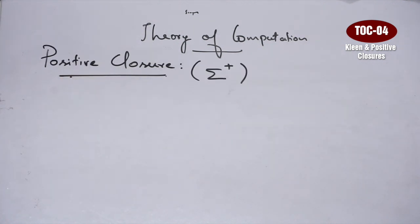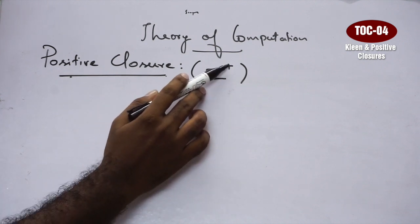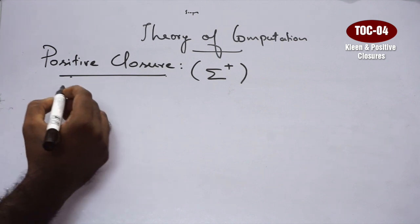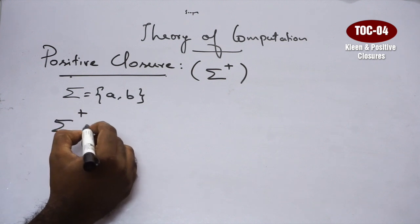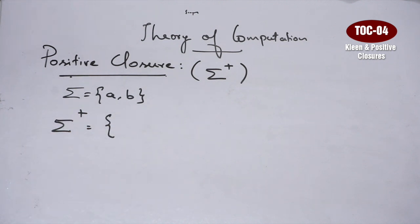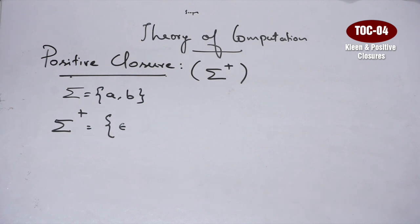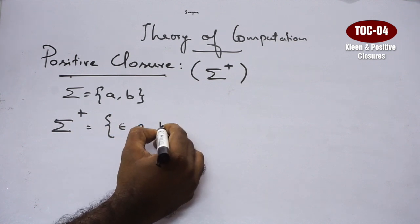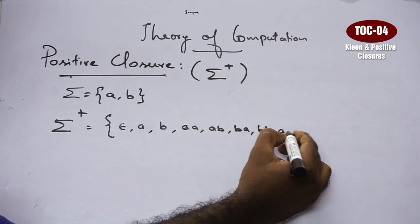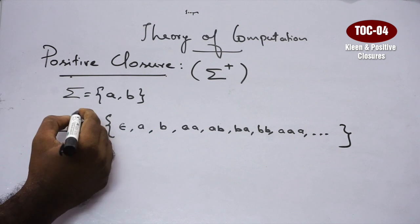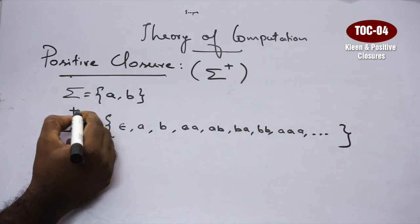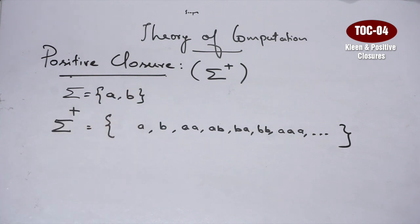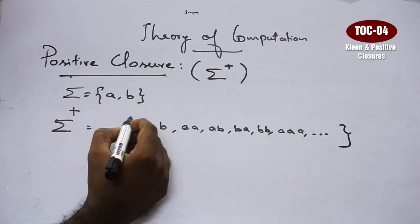Now we will look at positive closure. These two are interrelated but not very different. The notation uses a plus symbol. Kleene closure starts with string of length 0: Epsilon, then length 1, length 2, and so on. Positive closure starts with string of length 1 — it does not include Epsilon.